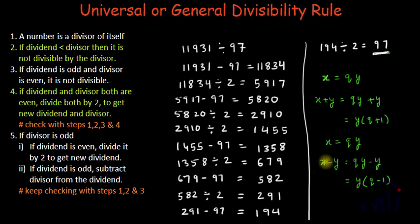If x is divisible by y, then x minus y is also divisible by y. When we subtract the divisor from the dividend, it doesn't affect the divisibility of the original dividend. This means we can subtract or add any multiple of the divisor without affecting divisibility.